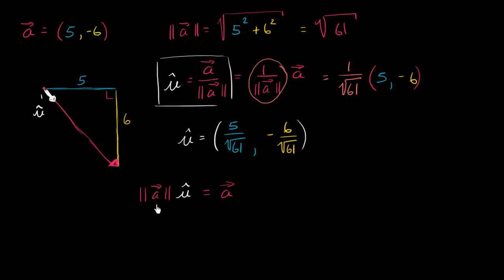So if we wanted to write our original vector kind of broken up this way, we could say that our original vector is equal to its magnitude, is equal to square root of 61, times our unit vector, and that makes sense. The length of this unit vector is 1 square root of 61th of this entire length right over here. And this of course is going to be the same thing as the square root of 61 times all of this business.